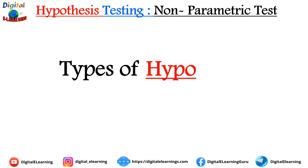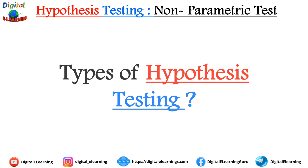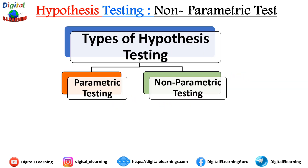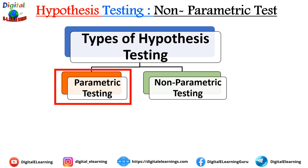Generally, hypothesis testing falls into two categories: parametric testing and non-parametric testing. Parametric tests assume that the data being analyzed comes from a population that follows a specific distribution, typically a normal distribution.